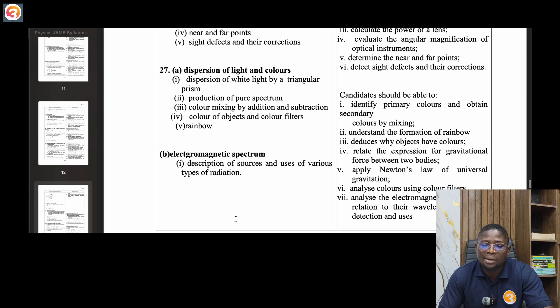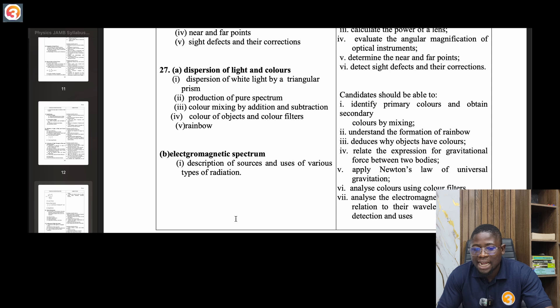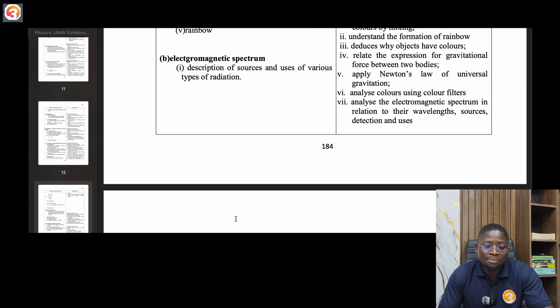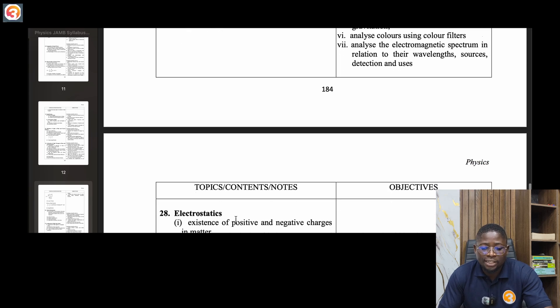Twenty-seven, dispersion of light and colors. Dispersion of white light by triangular prism, production of pure spectrum, color mixing by addition and subtraction, color of objects and color filters, rainbow. Electromagnetic spectrum, description of sources and uses of various types of radiations.